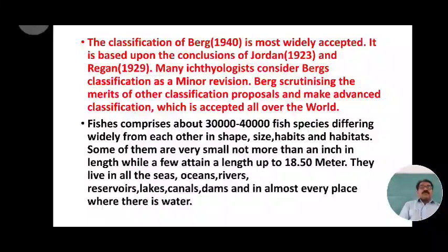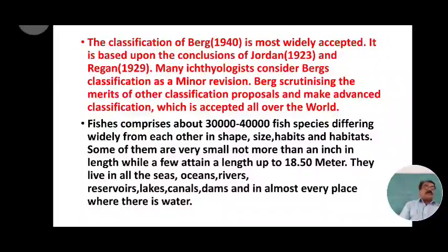Fishes — comprising about 30,000 to 40,000 species — differ widely from one another in size, habits, and habitat. All these fishes are different from each other in terms of the conditions and habitats they occupy.